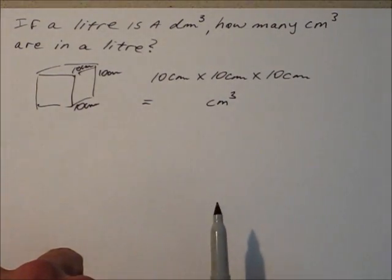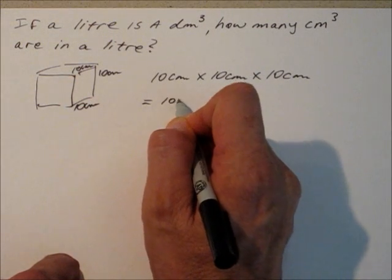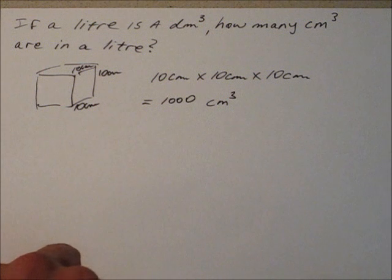The rest of it is just multiplying it out. In this case, it's just a thousand, of course. So we write one thousand cubic centimeters. So there's the answer to our question.